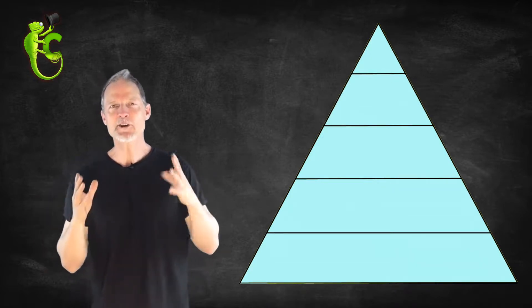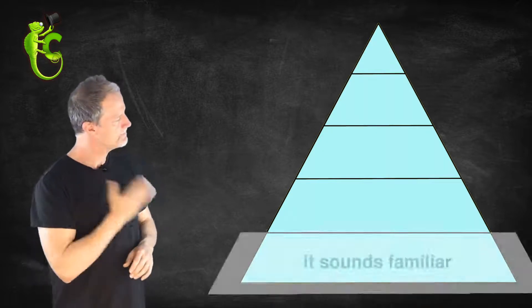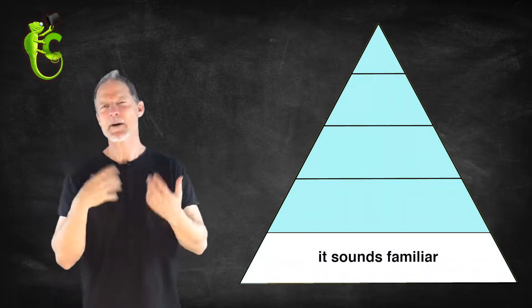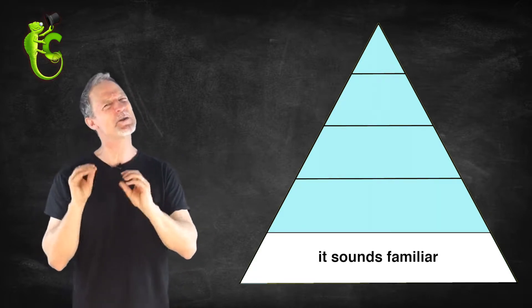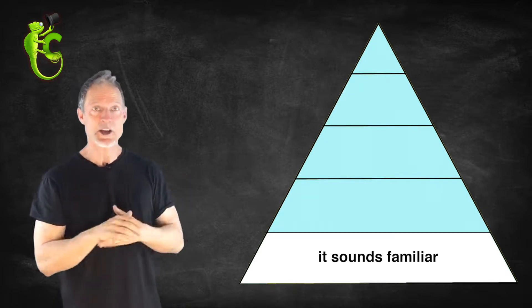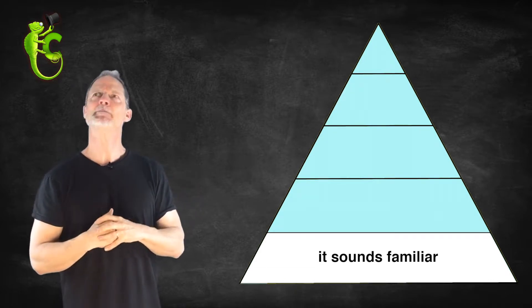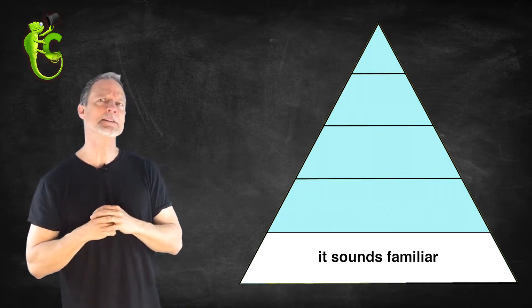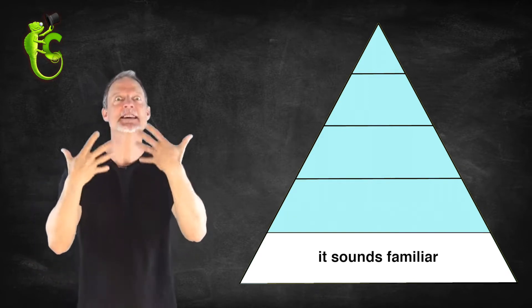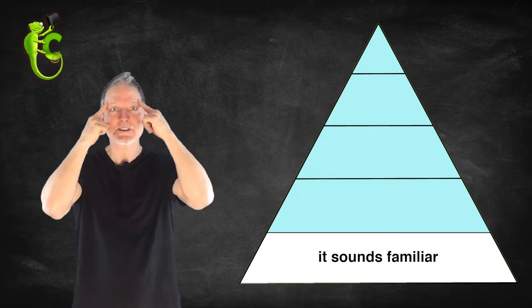So the first level of the pyramid is: it sounds familiar. This is that word that, oh yeah, I don't know exactly what it means, but it does sound familiar. You know, ubiquitous. Yeah, ubiquitous... sounds familiar. Well, that's the introduction of the word into our brain.